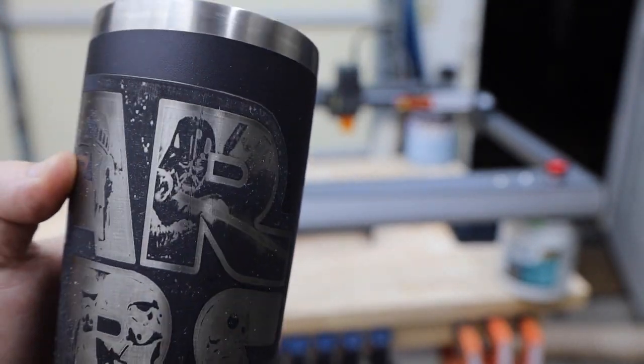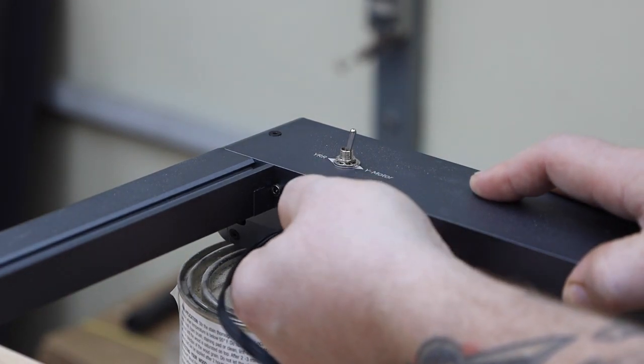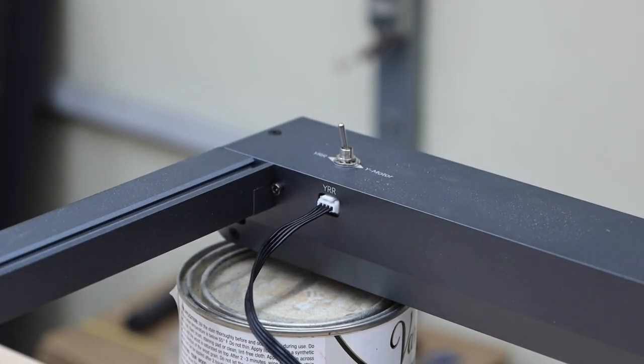They've made it much easier to use the rotary attachment on this model. You simply plug it into this port and flip this switch. Then you just have to select the rotary option in your program.